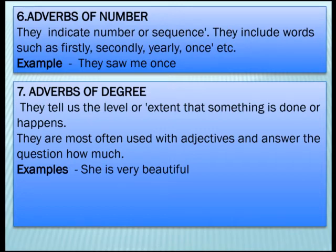The degree shown is 'very'. Another example: 'He walks too slowly' — here 'too' shows the degree of the adverb 'slowly', meaning excessively slowly.